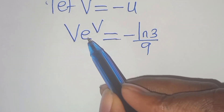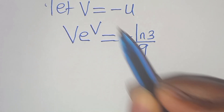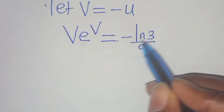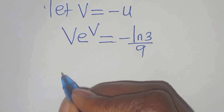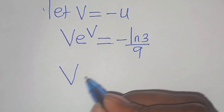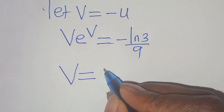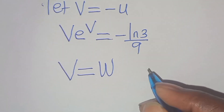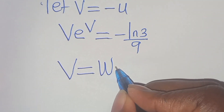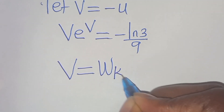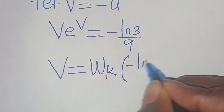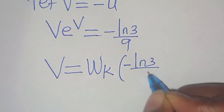We have v multiplied by e to the power of v, equal to minus ln(3) divided by 9. We can introduce the Lambert W function here. In this case, v will be equal to the Lambert W function — the W subscript k — applied to the argument minus ln(3) divided by 9.